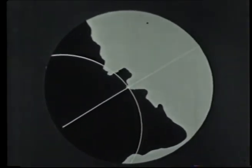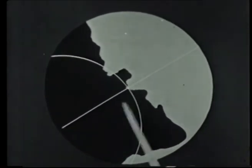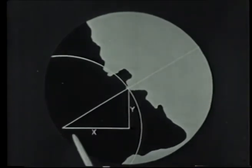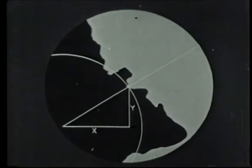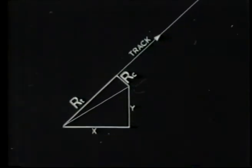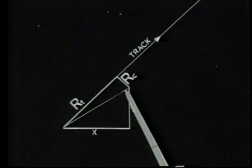You will remember that when the operator brings a response under the markers, its coordinates X and Y are set up on the marker potentiometers. These coordinates are converted by the steering circuits to track range and cross range.